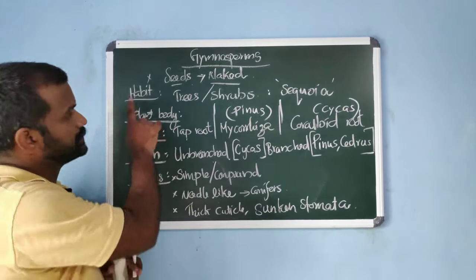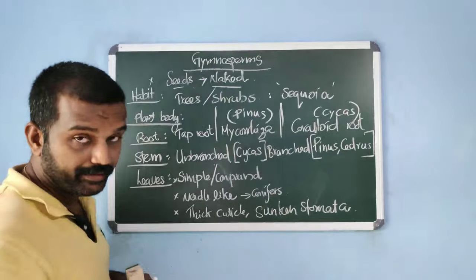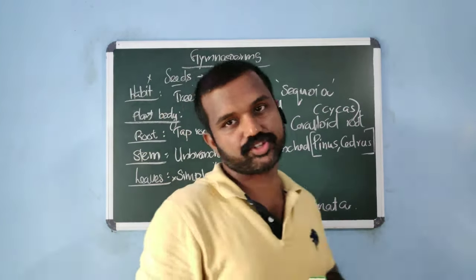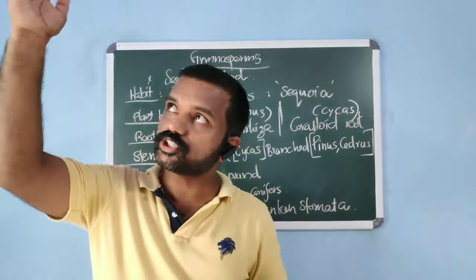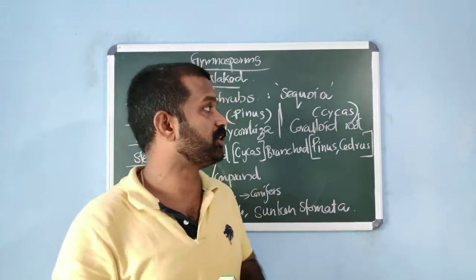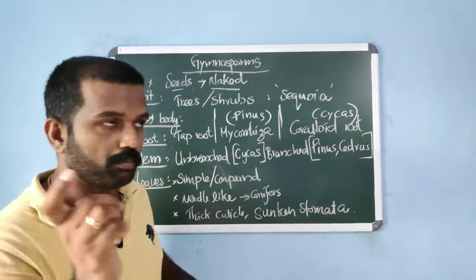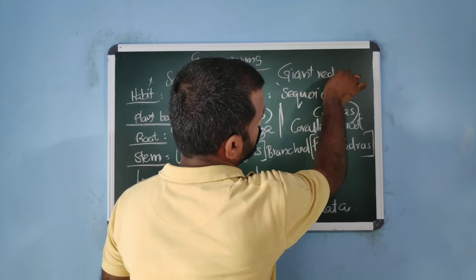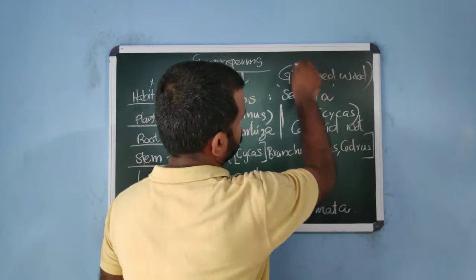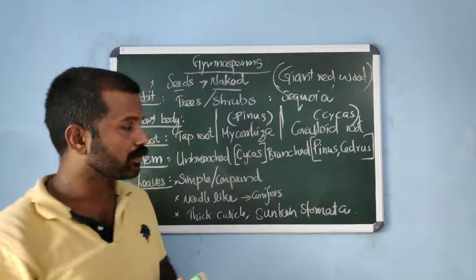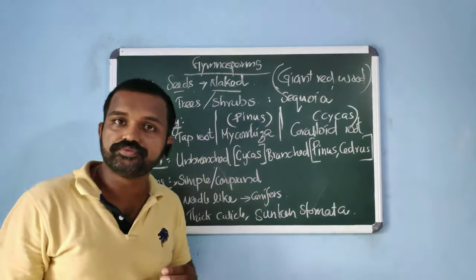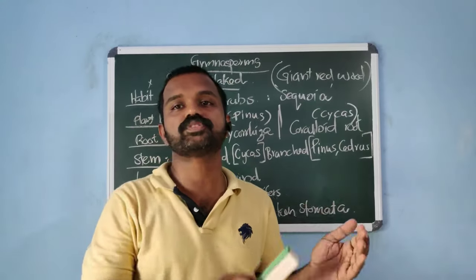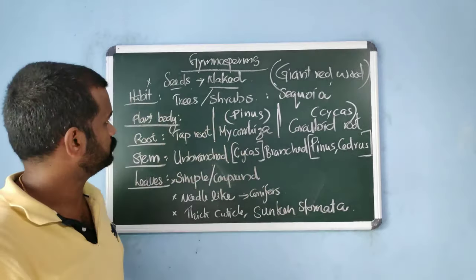The second point is about habit. Most gymnosperms are trees — both mid-sized and tall trees. The tallest tree is sequoia, commonly known as giant redwood, which is a gymnosperm. A few of them are shrubs, so both trees and shrubs are found in gymnosperms.